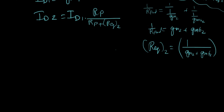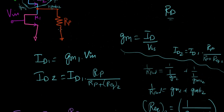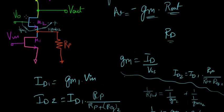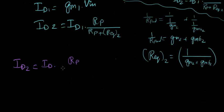So ID2 now is ID1 times RP. RP is just this resistor. These two are connected basically in parallel, the combination here. RP plus one over GM2 plus GMB2.